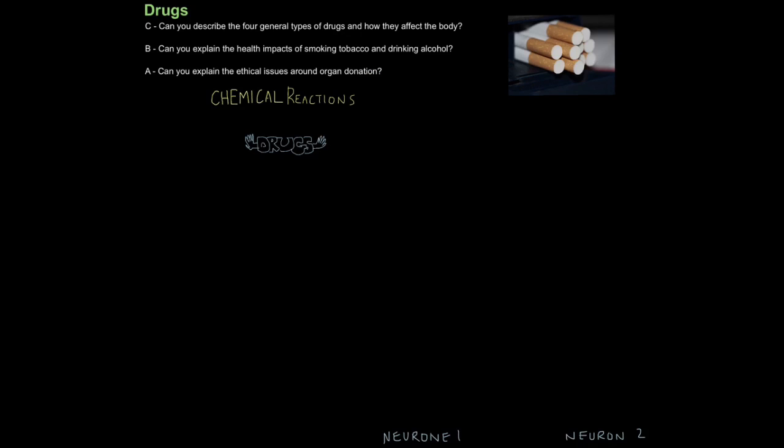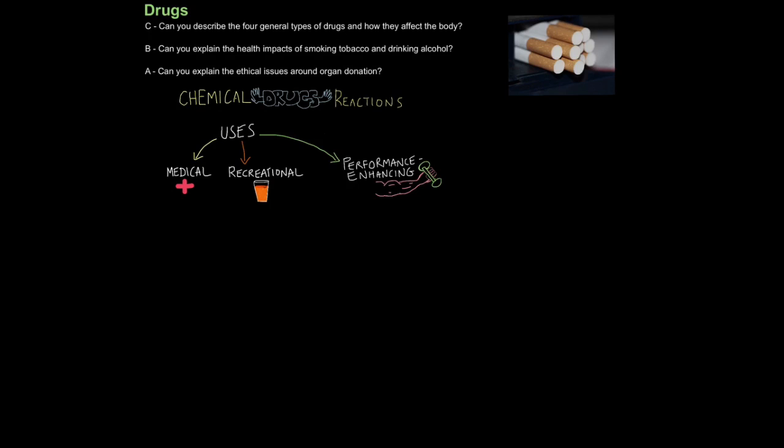A drug is basically a chemical that interferes with chemical reactions that occur in the body, specifically those which occur in the nervous system. Drugs can be beneficial and harmful but there are three main uses: firstly medical, then recreational for leisure, and thirdly performance enhancing drugs. These are drugs taken by athletes to improve their performance at a particular sport.